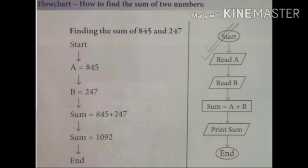After the processing part, we are going to get an output in the form of parallelogram. That is, print sum. After that, we are going to put an ellipse and write end in that. This is how you can make the flowchart to find the sum of two numbers.